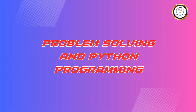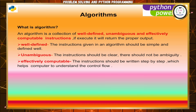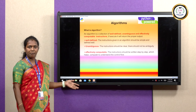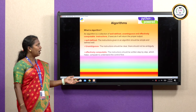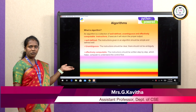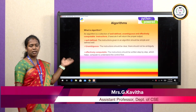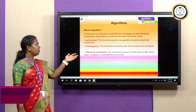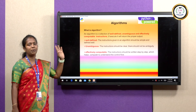What is an algorithm? The algorithm is nothing but a collection of well-defined, unambiguous, and effectively computable instructions. If these three keywords are satisfied, your output will be a proper output.